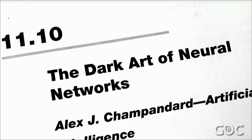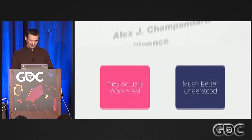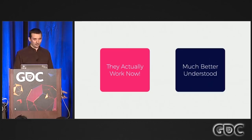My journey with neural networks actually started a long time ago. Fifteen years ago, I published a book chapter called The Dark Art of Neural Networks. And luckily, a lot of things have changed since then — now they actually work. We understand them much, much better. The entire academic community has kind of converged around deep learning, taking the best ideas from the field, and we've got a much better theoretical understanding of how they work.